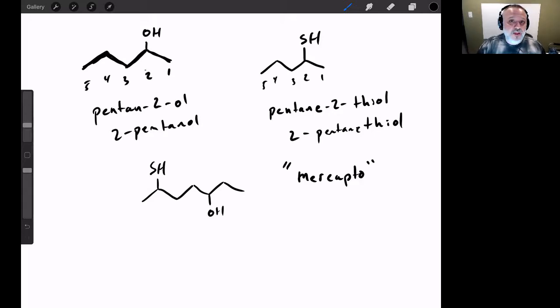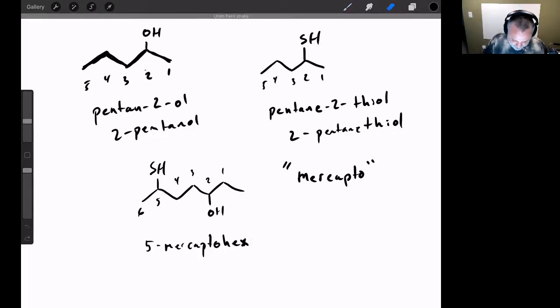That's the substituent name for SH when it appears in a group that is higher priority than the SH like it is in this particular example. So when it comes to numbering, we're still going to number in the direction that gets us to the highest priority group. One, two, three, four, five, six. In this case, OH being the higher priority group, so we'd want to get to that direction faster. Wait, I numbered this totally wrong. I'm glad I caught myself before I posted this on YouTube. Let's go back and do all of this again.